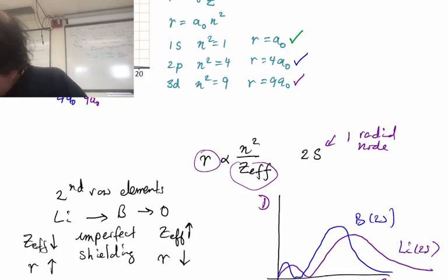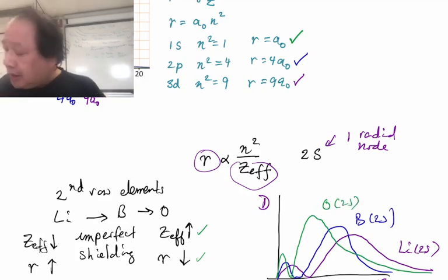And then finally oxygen will have the biggest z effective and the smallest r. And so I'll put its function like this. Oxygen 2s. And this is qualitatively what we expect to find.